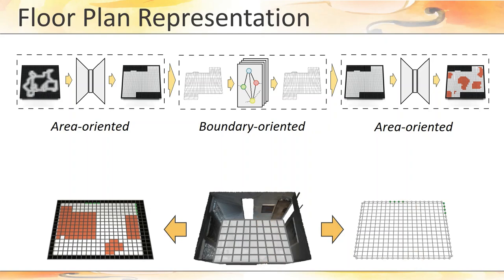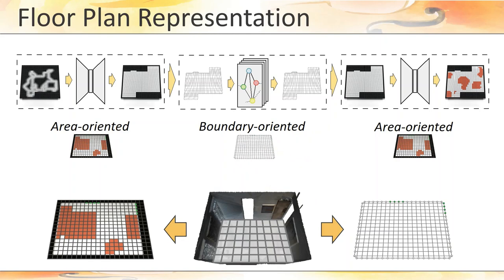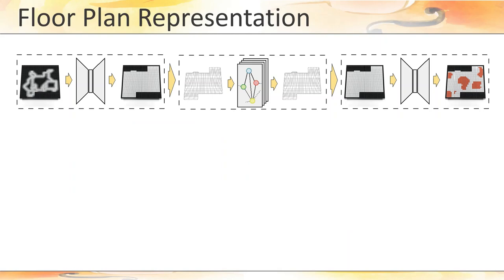We use the area-oriented image-based representation for the first and the last network, and the boundary-oriented graph-based representation for the second network. Since we aim to extract different information at each step, the features encoded in the input and output data items of the networks are different.